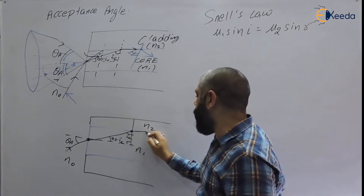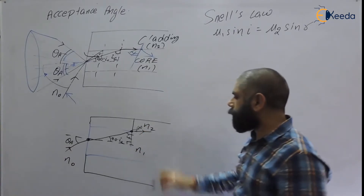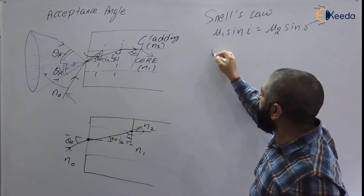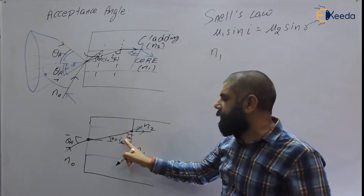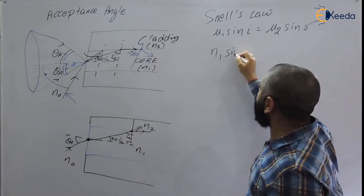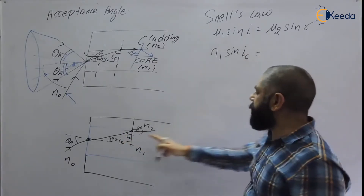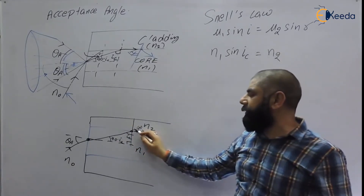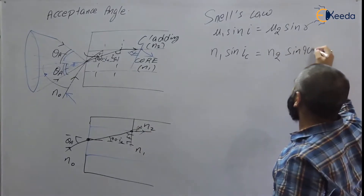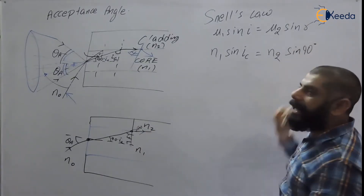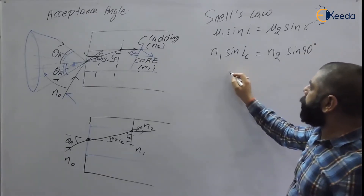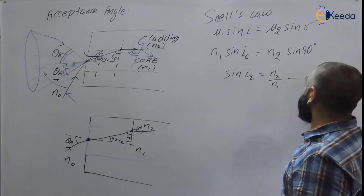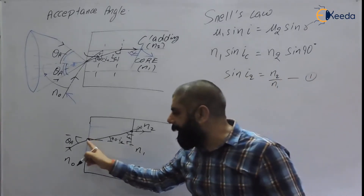If this is the critical angle, the refracted angle will be 90 degrees. Applying Snell's law at the core-cladding interface: n1 × sin(ic) = n2 × sin(90°). Since sin(90°) = 1, this gives sin(ic) = n2/n1. This is Relation 1.